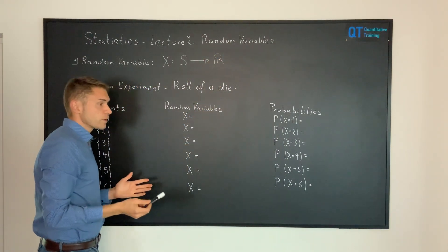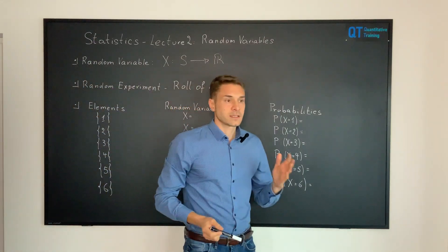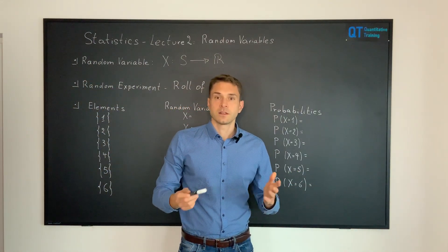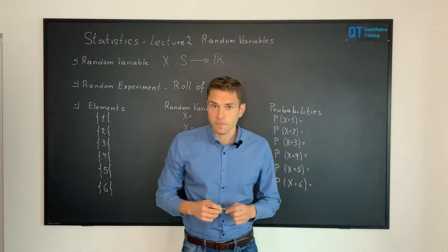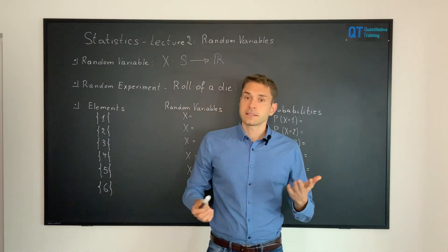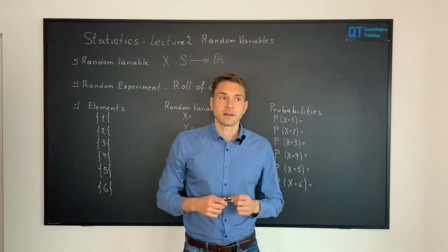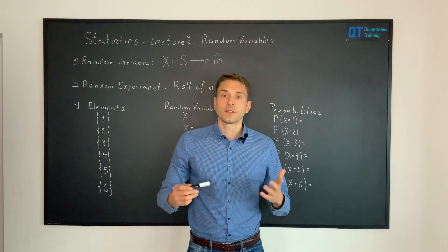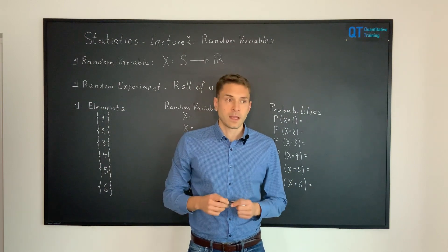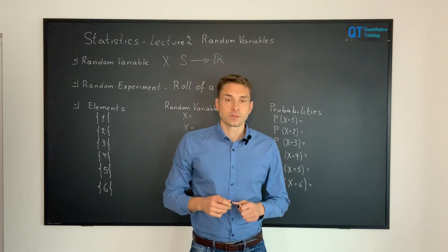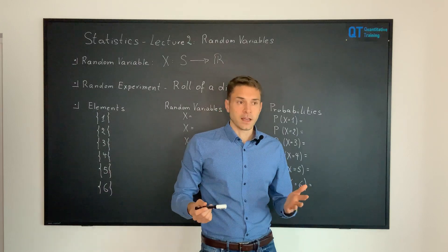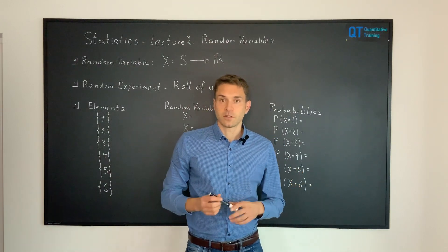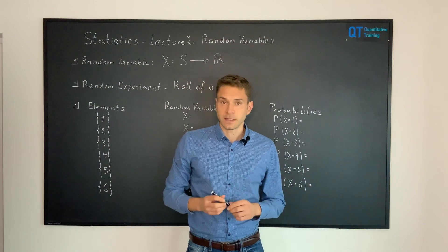In the previous lecture we discussed a particular random experiment which was the flip of a coin two times in a row. This time we are going to consider another random experiment which is the roll of a die. The outcomes of the roll of a die are numbers between one and six according to their six different faces.